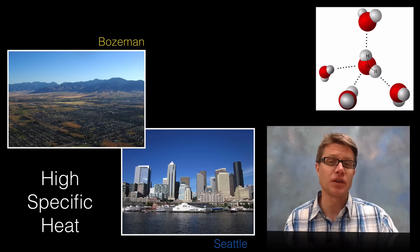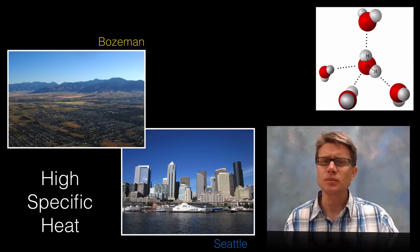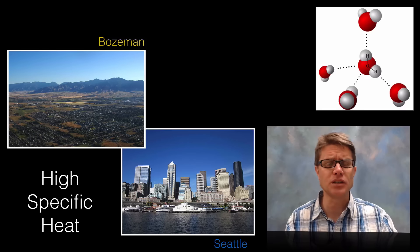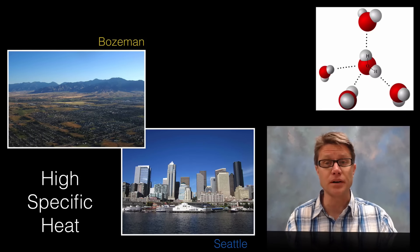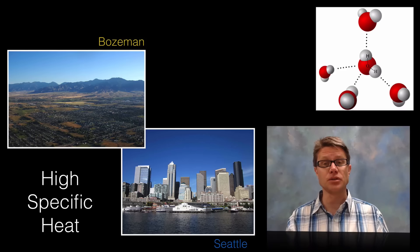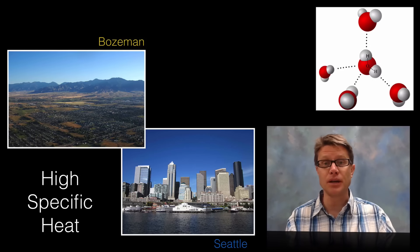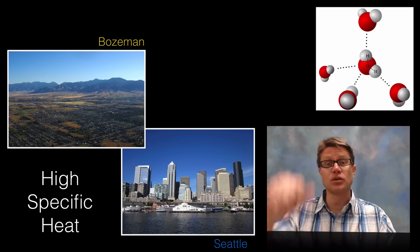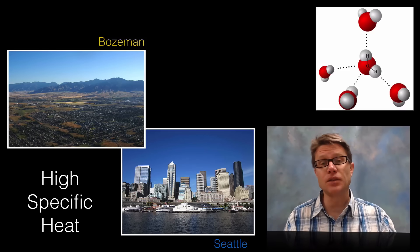It also accounts for the high specific heat of water. What does that mean? It's really hard to change the temperature of water. The reason why is to change the temperature you have to pull those molecules apart. If you want to evaporate it you really have to free up one of those water molecules. I live in Bozeman, which looks just like this surrounded by beautiful mountains.